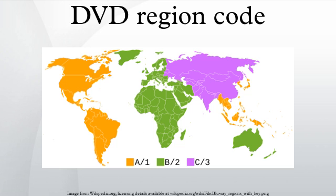Blu-ray discs use a much simpler region code system than DVD, with only three regions labeled A, B, and C. For the UMD, a disc type used for the PlayStation Portable, UMD movies are region locked and use roughly the same regions as DVDs, but UMD video games are region free.